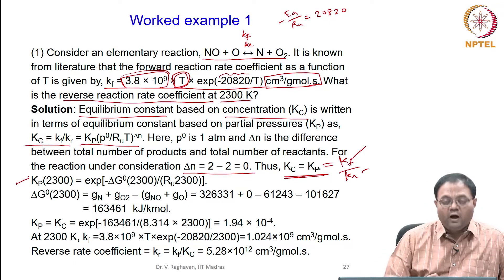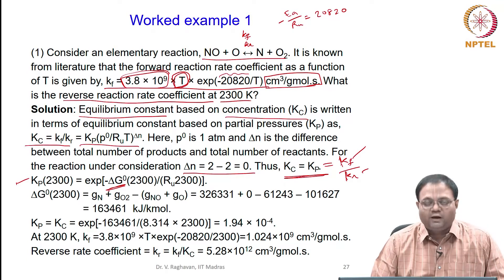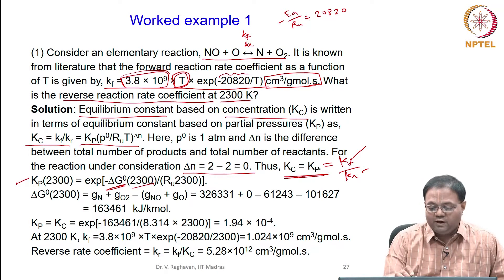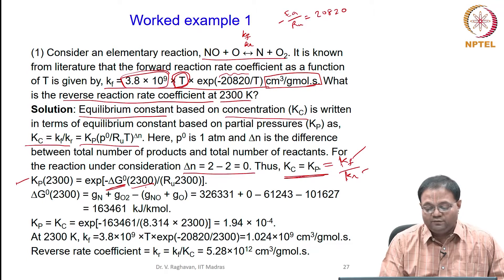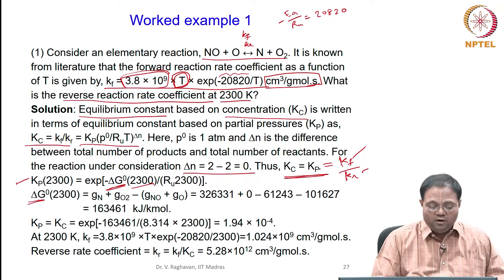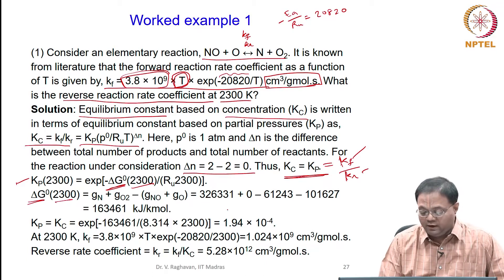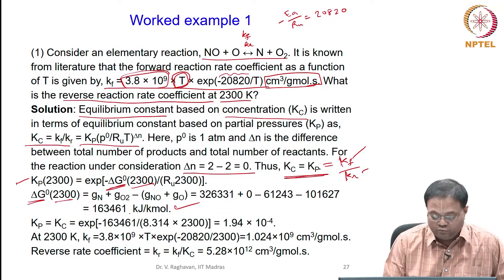Kp at 2300 K is calculated using the standard Gibbs function change delta-G at 2300 K. For this reaction, products are N plus O₂ and reactants are NO plus O. Substituting the Gibbs free energy values of N, O₂, NO, and O at 2300 K, we get delta-G equals 163,461 kJ/kmol.